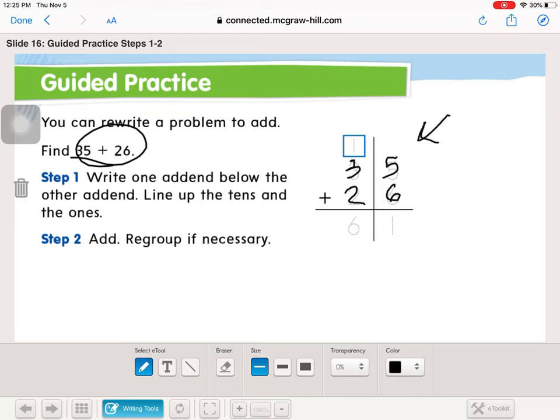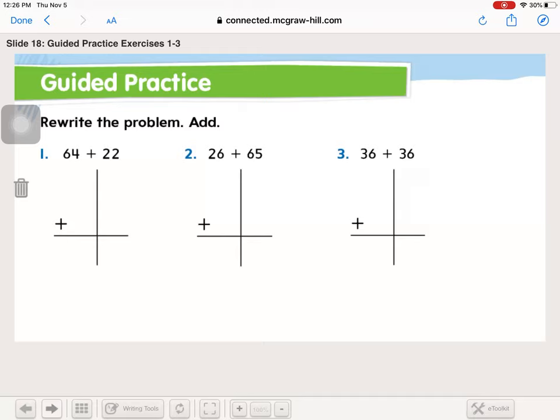So we always start in the ones. 5 plus 5 is 10. Plus one more is 11. 11 has 1, 1. And we have to regroup 10 of these over here. 1 plus 2 plus 3 is 6. Did we have to regroup? Yes, we did. Why did we have to regroup? Because 5 plus 6 equals 11. And 11 is more than 10.